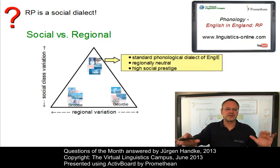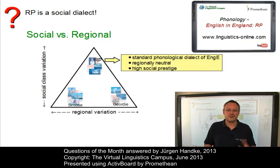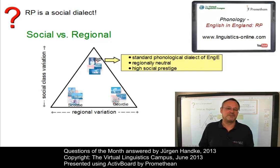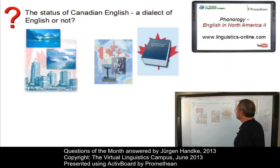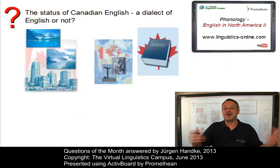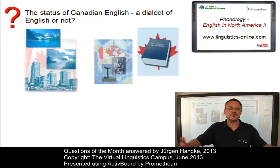There is no particular region that can be associated with received pronunciation. Well, that was an e-lecture in its own right — perhaps I'd better take up this topic again in a separate e-lecture. Anyway, my complex answer may help to solve the next problem relatively quickly. It concerns the status of Canadian English. Is it a dialect of English or not? If we take the parameters we've just discussed, we can clearly say it is a regional dialect confined to Canada and it is socially neutral.